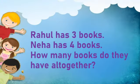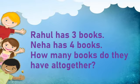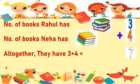Let's solve this problem. Rahul has 3 books. Neha has 4 books. How many books do they have altogether? We have to find out how many books Rahul and Neha have altogether. The number of books Rahul has is 3, and the number of books Neha has is 4. Altogether, they have 3 plus 4, which is equal to 7.